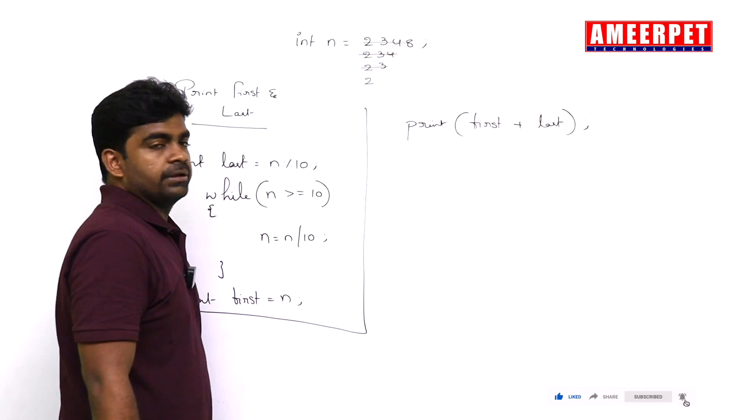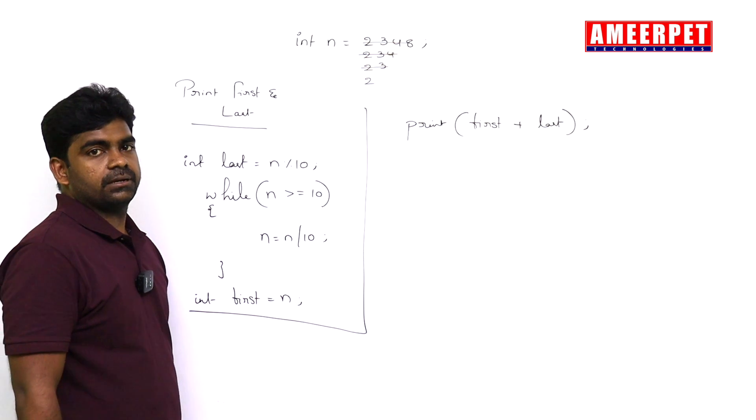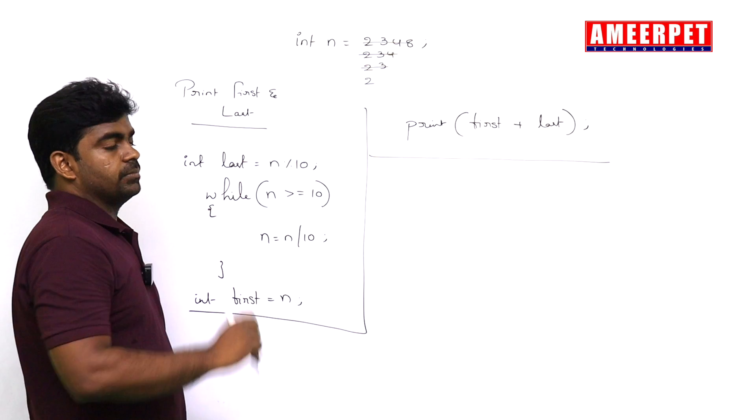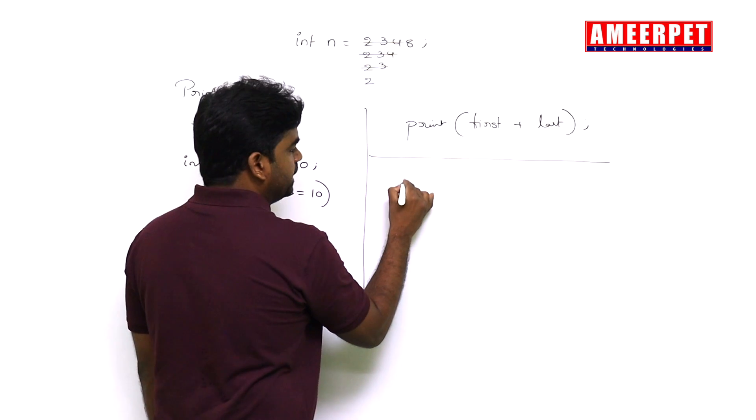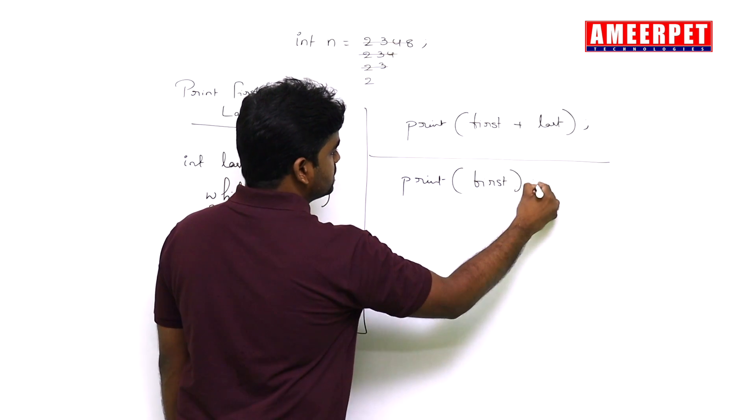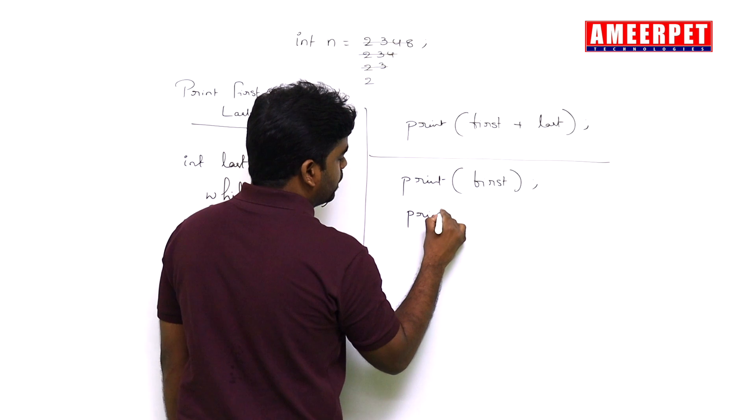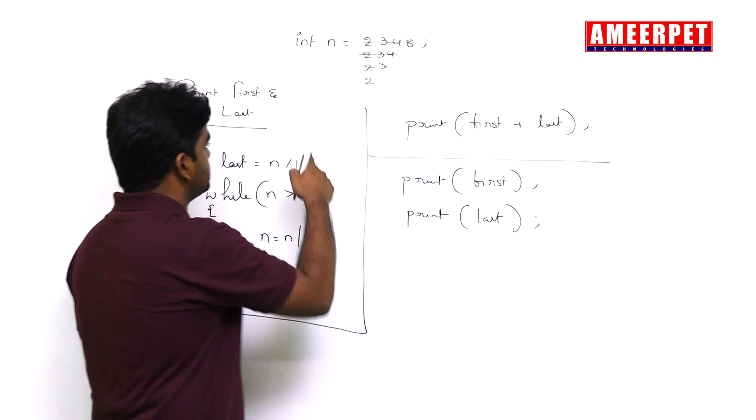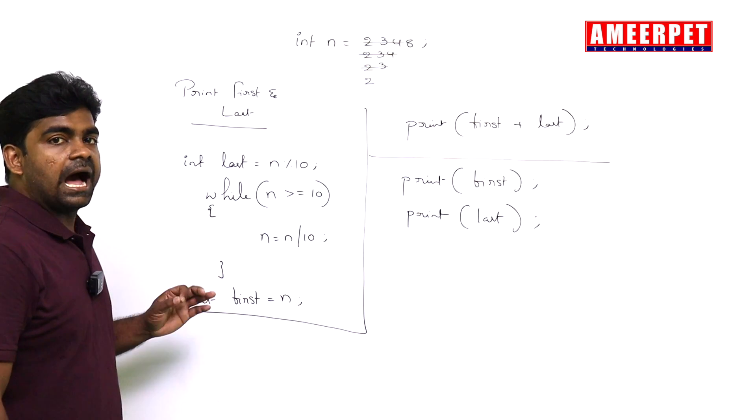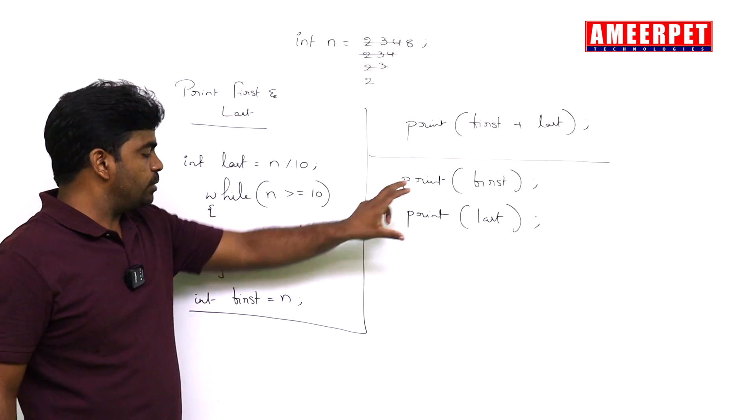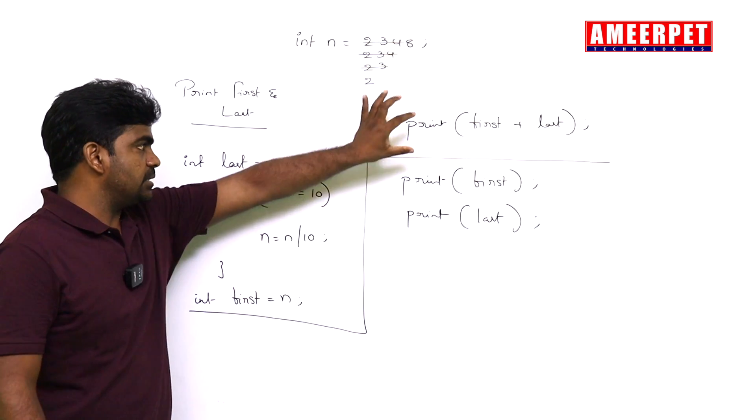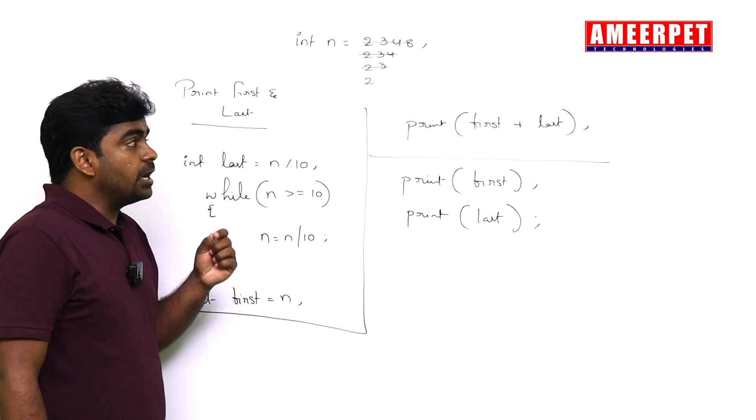This is the sum of first number and last number. If they're asking to print, just print in two lines: print the first number equals to first, last number equals to last. This logic is common for all these things. If they ask to print, write these two lines of code. If they ask to find the sum, write this line of code.